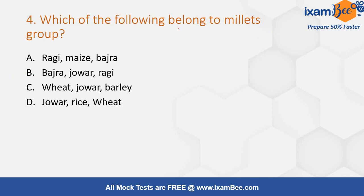Which of the following belongs to the millet group? Options include: (A) raghi, maize, bajra; (B) bajra, jowar, raghi; (C) wheat, jowar, barley; (D) jowar, rice, wheat. The correct answer is bajra, jowar, and raghi — option B.